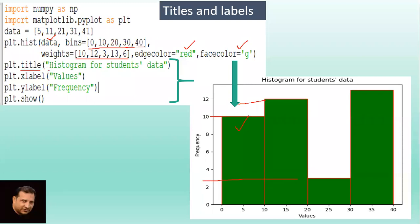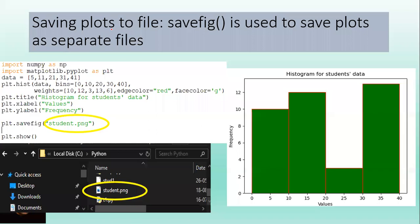Now we have given a title by using plt.title. You can write a proper title here like histogram for students data, so it is being displayed on the top of chart. Then on x-axis, if you want something, you write plt.xlabel 'values', see here. Similarly, label for y-axis is given by plt.ylabel.